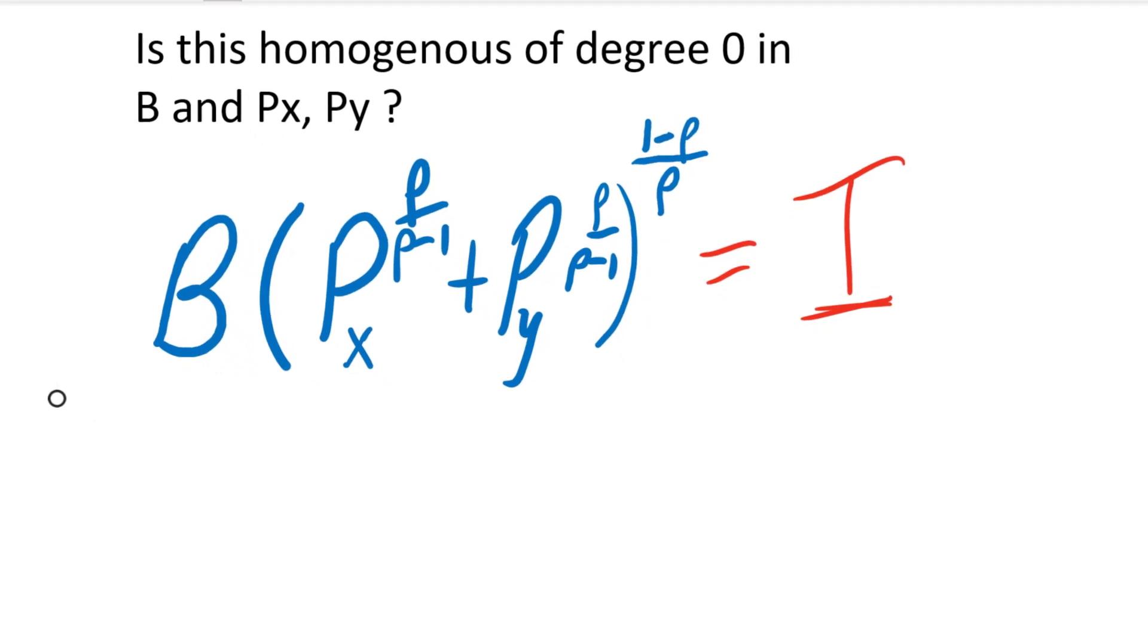Alright, welcome to part 3 of working with the constant elasticity of scale utility function. At the end of the last video we derived this indirect utility function, and Lewin asked a question on YouTube: How can we show that this indirect utility function is homogeneous of degree 0 in budget and prices?